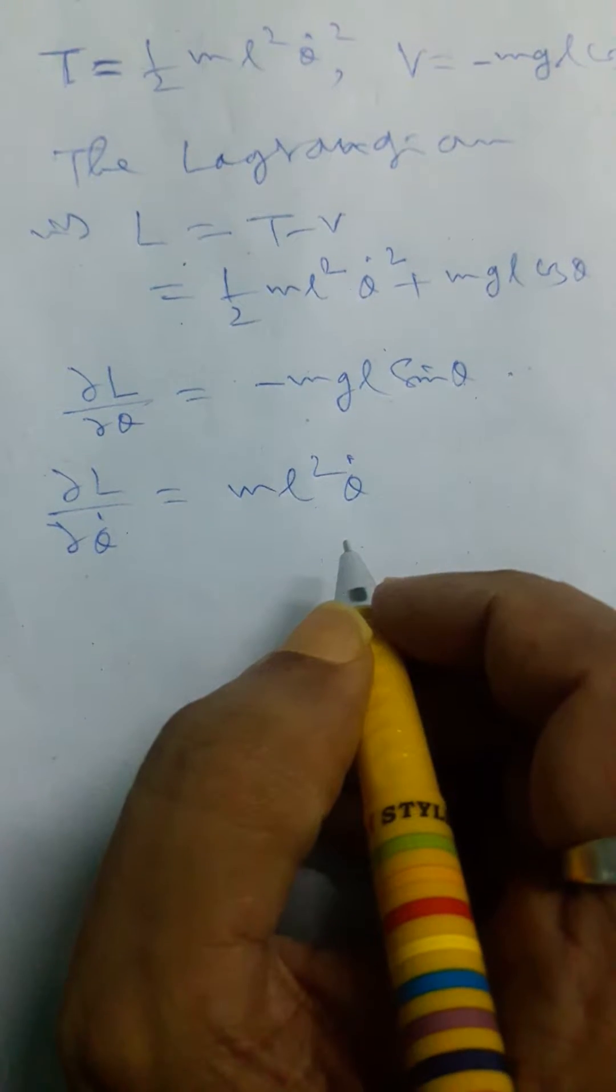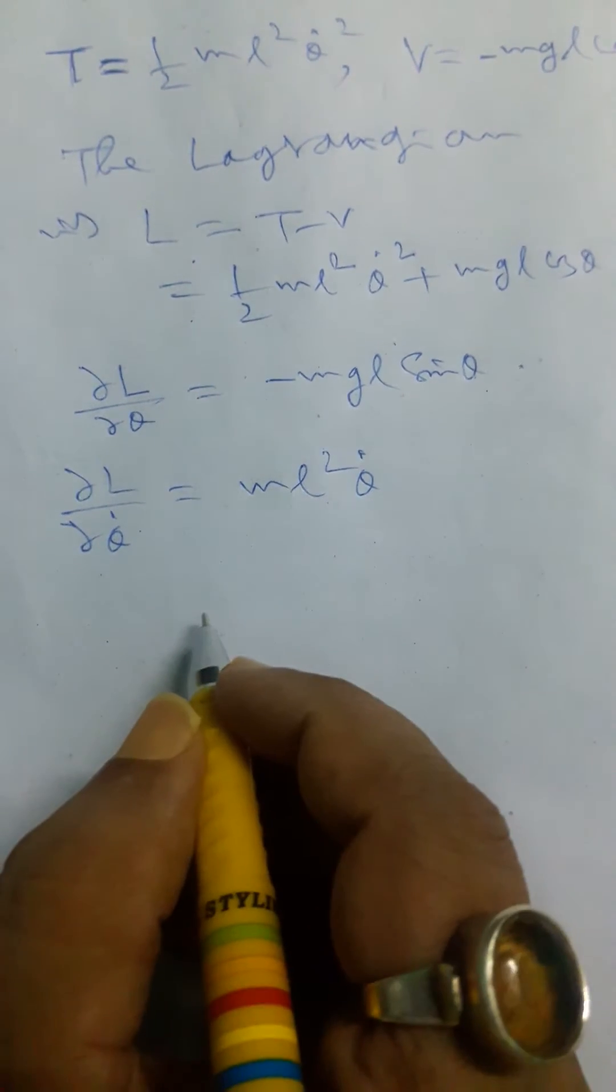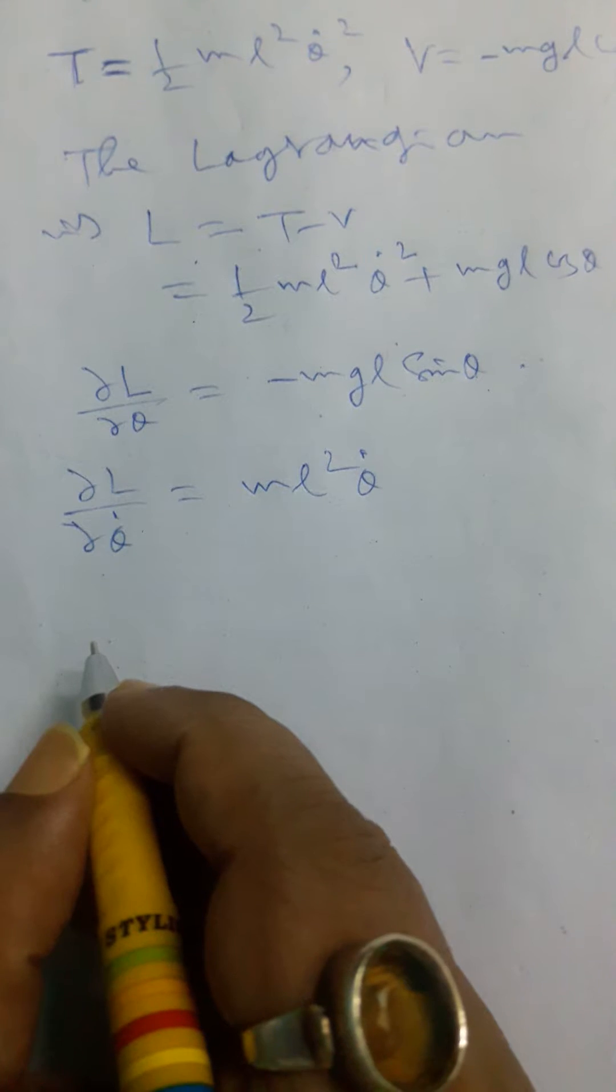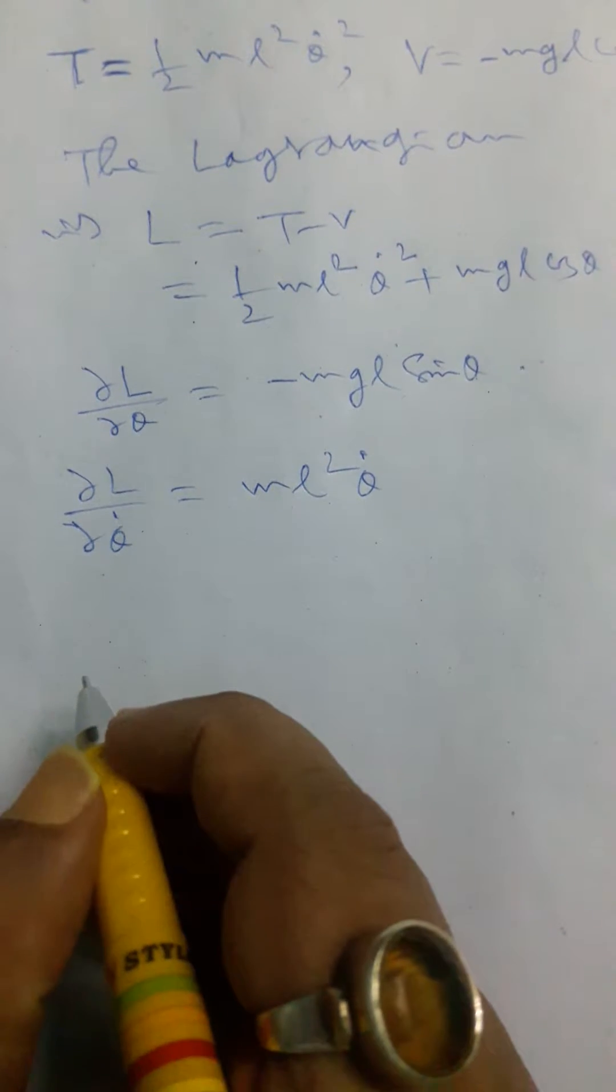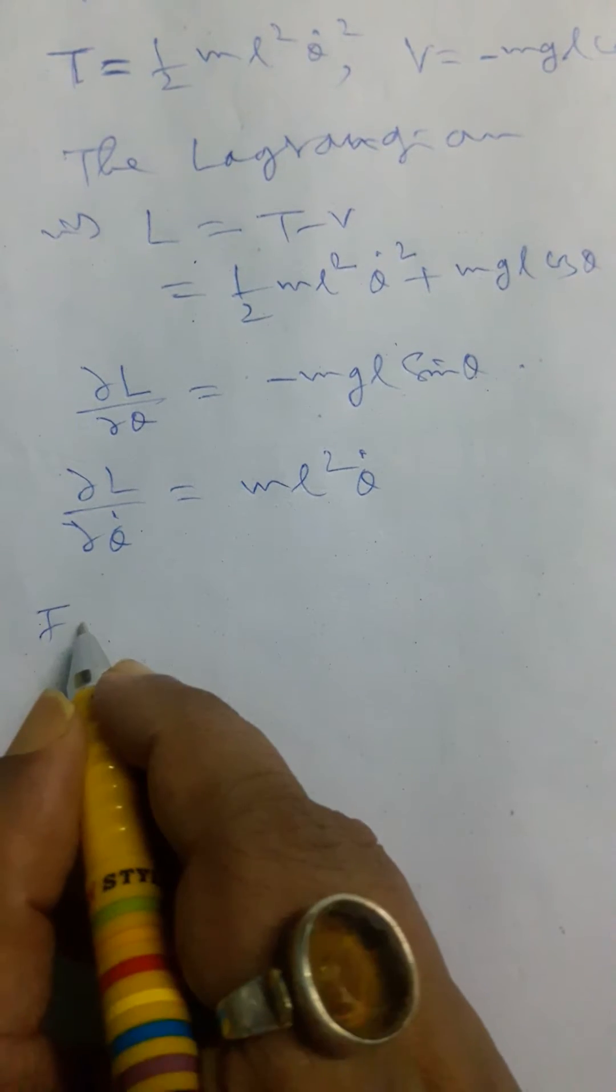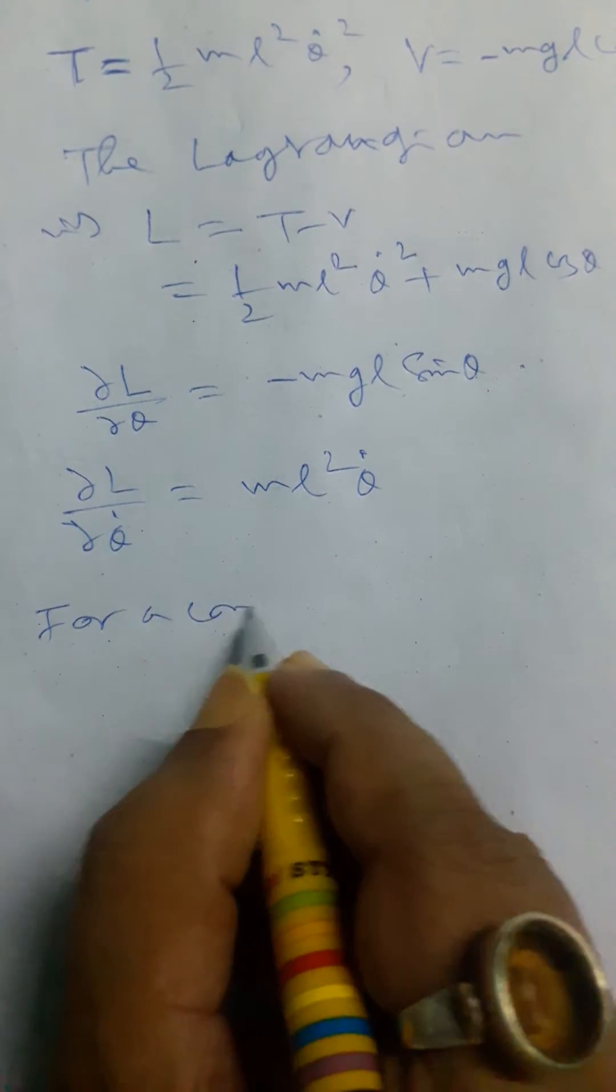Now it's clear for the equations of the Lagrangian system. And for a conservative system, we have the equation, the Lagrangian equation of motion. So it's under the conservative system. So for a conservative system...